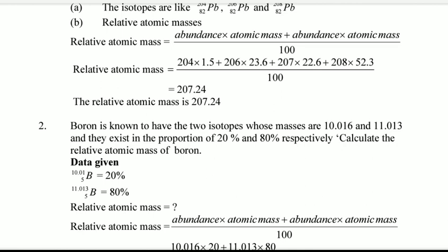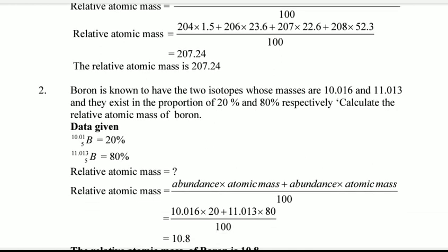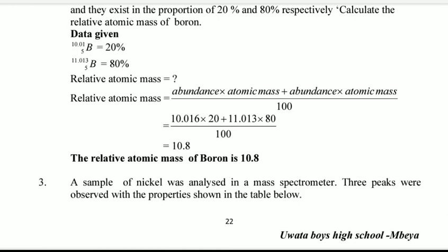And they exist in a proportion of 20% and 80% respectively. Calculate the relative atomic mass of boron. That is easiest.